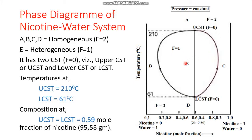Now for the heterogeneous zone, we have the conjugate mixture where the two solutions are separated out — one is nicotine in water, and one is water in nicotine. The two solutions are different. The upper CST value is 210 degrees Celsius and the lower CST value is 61 degrees Celsius. That's all about the phase diagram of nicotine. We have two phases, so 3 − 2 = 1 degree of freedom.